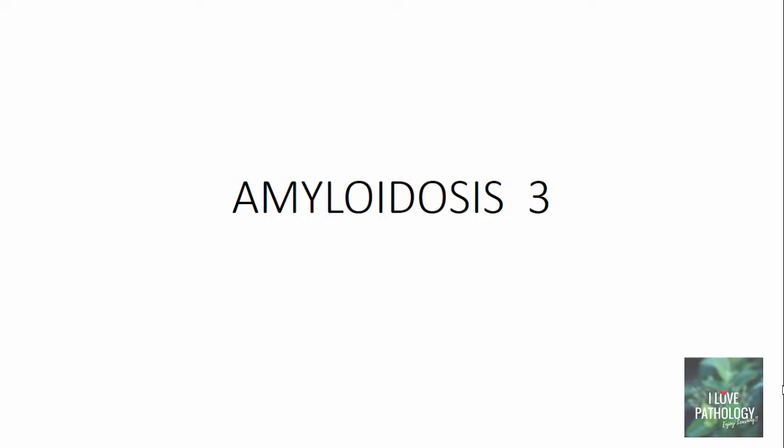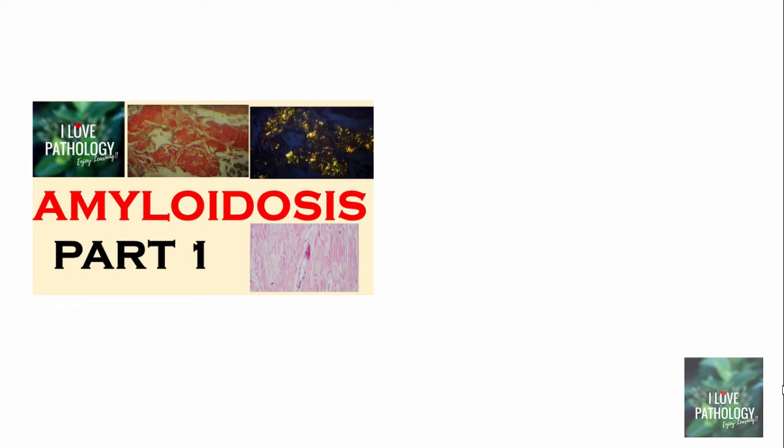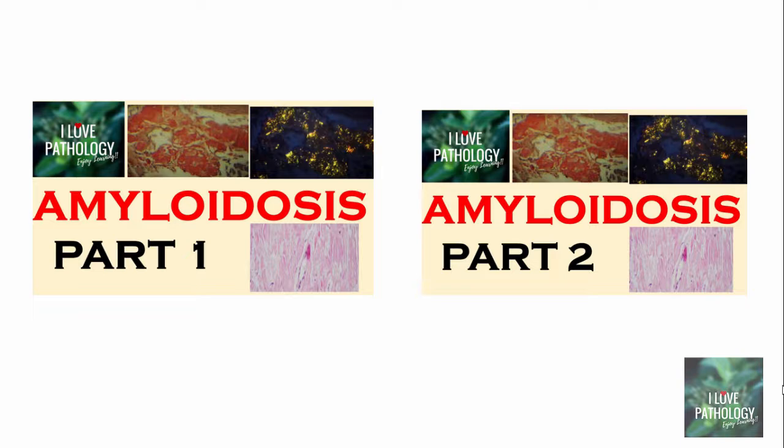Hello friends, welcome to this short tutorial from Pathology Made Simple at iloepathology.com. Today's topic is a continuation of amyloidosis — that's Part 3. In Part 1 we discussed the properties of amyloid, and in Part 2 we discussed in detail the pathogenesis and classification of amyloidosis. If you are here for the first time, I suggest you view those videos before proceeding further. The links are given below in the description.